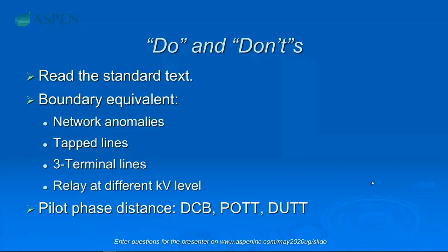Now for two event files: first select the relay group at the local end, then press and hold the Shift key and select the relay group at the remote end, right-click and select Fault Locator. Select the event file for the local end first, then for the remote end. The dialog box for two event files is pretty similar to the one for a single event file except we only have two algorithms: IEEE Two-End, and Negative Sequence Current Ratio. For the Negative Sequence Current Ratio algorithm, we take the recorded negative sequence current magnitude from the local end and the remote end, get a ratio — value A — then simulate faults along the line to get another ratio — value B — and the fault location is found when the minimum difference between ratio A and ratio B is found.